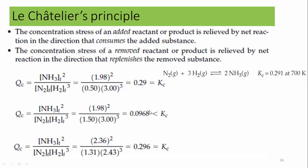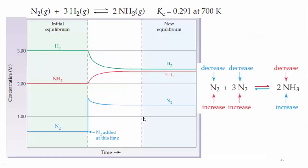We discussed this condition in detail in the previous lecture. Since Qc is less than Kc, the nitrogen concentration decreases, ammonia increases, and hydrogen decreases — confirming the reaction shifts forward.